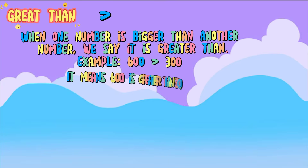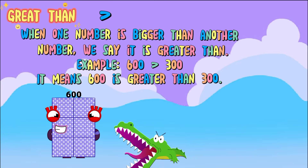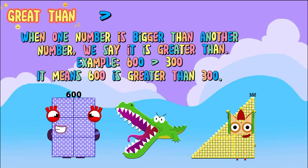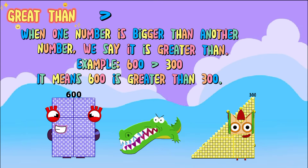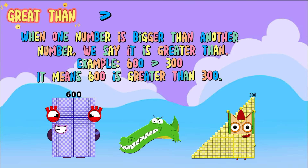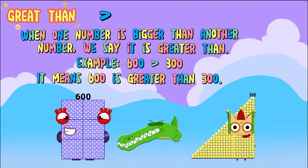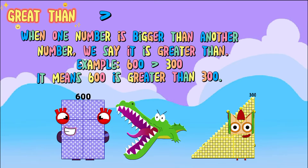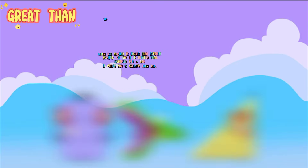Greater than: when one number is bigger than another number, we say it is greater than. For example, six hundred is greater than three hundred.